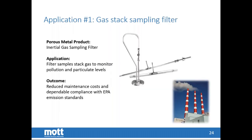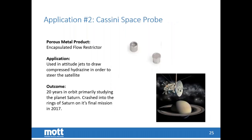The gas stack sampling filter is a common requirement in the petrochemical industry, where gases generated in the process must be monitored for pollution and particulate levels in exhaust chimneys — sometimes as an emission standards requirement. Mott offers inertial gas sampling (IGS) systems that can be installed in your process without disrupting flow, allowing you to pull samples at regular intervals and send them to analyzing equipment or a lab to ensure pollution levels are in control.